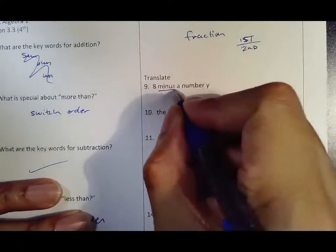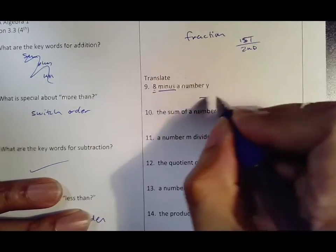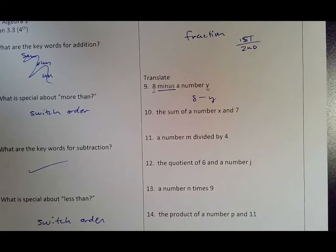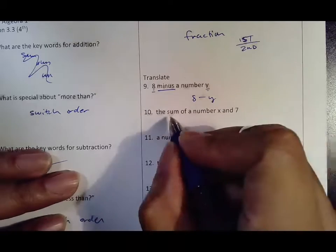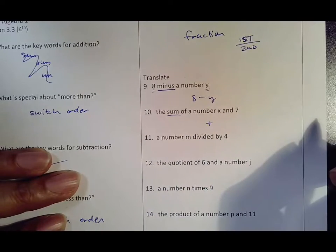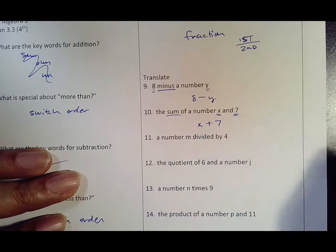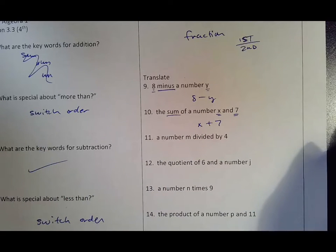8 minus the number y: minus means we subtract, 8 is first so it goes in front, y is second so it goes in the back. That's it. Sum means plus. The first thing talked about is x, second thing talked about is seven. Follow the order, respect the order, get the questions right.